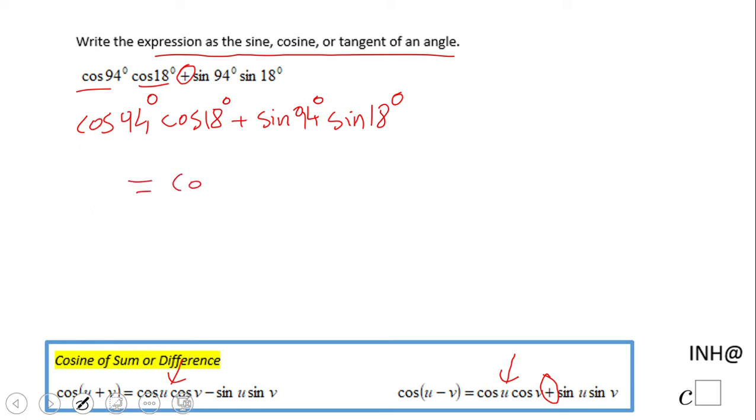So what do we have here? Cosine of 94 minus 18, which is cosine of 76 degrees. So that long expression you see is nothing else than cosine of seventy-six degrees.